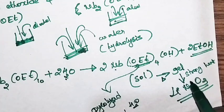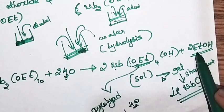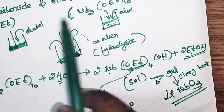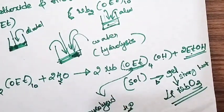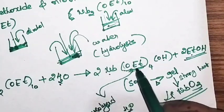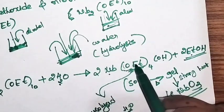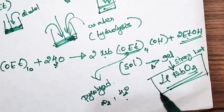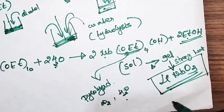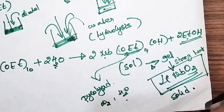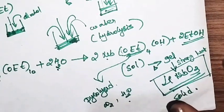Finally, after calcination, all ethanol evaporates, water evaporates, and the ethoxide part is pyrolyzed to carbon dioxide and water, leaving behind lithium niobate as the required solid product. This is the method for the preparation of lithium niobate using the sol-gel method. If you have any doubt about this sol-gel method, please let me know in the comment section.